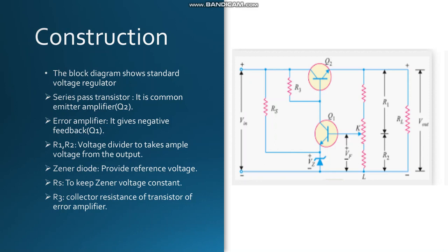Now we see the construction of the circuit diagram. The series pass transistor is transistor Q2, which is a common emitter amplifier. The error amplifier consists of transistor Q1, which gives negative feedback to the circuit. The R1 and R2 combination is the potential divider arrangement shown in the circuit diagram, and it provides feedback voltage taken from the output to the base of transistor Q1.